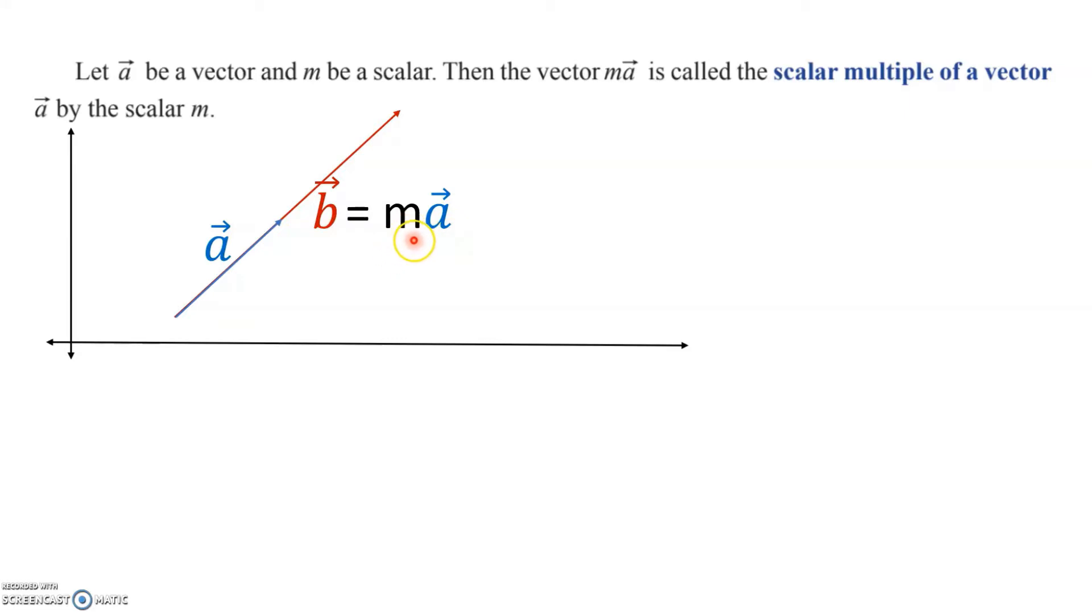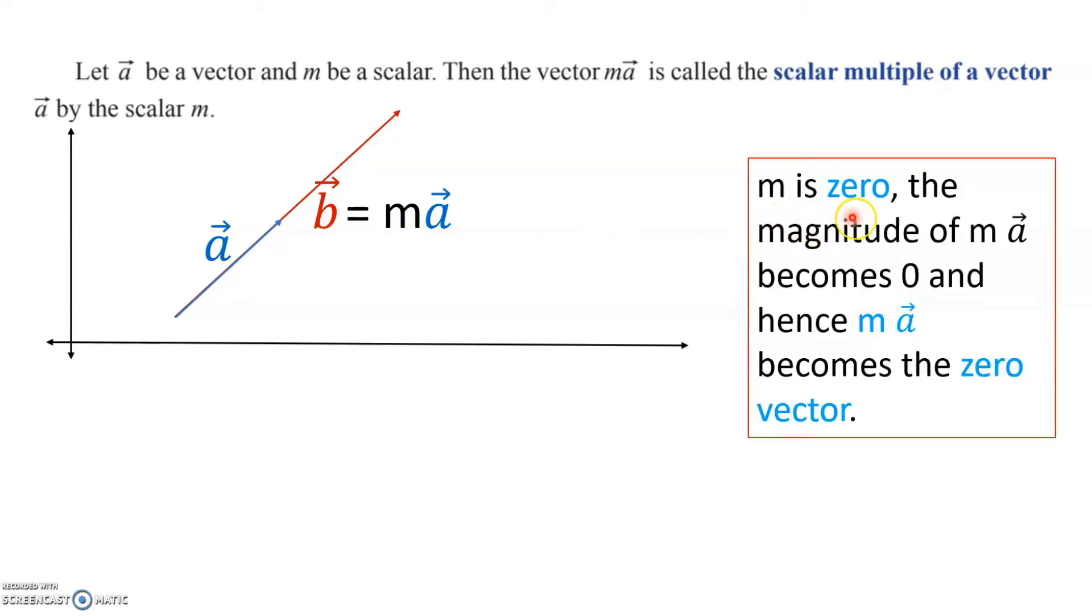If m is zero, the magnitude of m·a becomes zero and hence m·a becomes the zero vector. This means it will become a point, a zero vector.